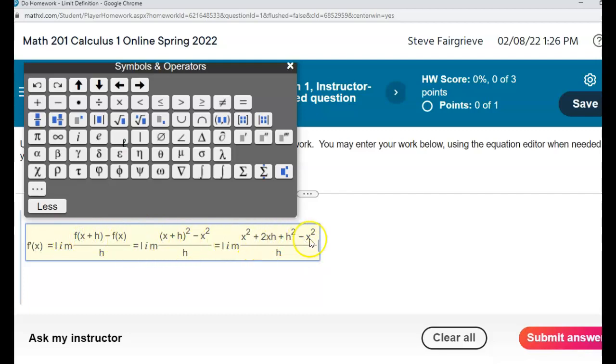So here the x squareds cancel out, and when they do, I have 2xh plus h squared. So I can factor out an h and leave me with 2x plus h on the top with an h in the bottom. And of course, at this point we can cancel out the h. The whole point of simplifying this was to eventually get it to this point where we can cancel out that common factor.